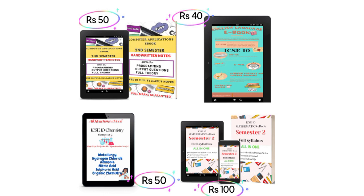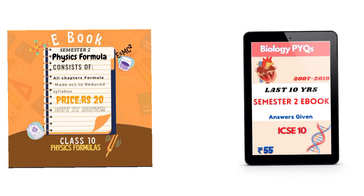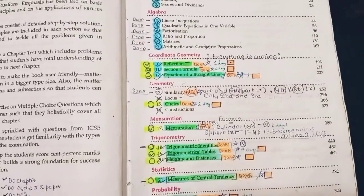Computer full syllabus, maths full syllabus, chemistry all reactions, English language full syllabus ebook, physics all formulas ebook, and biology previous year questions semester 2 ebook. Link to buy all of them is in the description box. Samples are also attached.